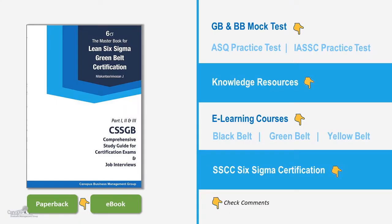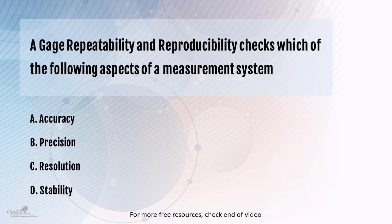Accuracy talks about the deviation from the standard — how good is the reading as against the standard or the norm. Precision talks about the variation in the readings, immaterial of whether it is accurate or not — are we consistently getting those values or not. Resolution talks about the least count, the smallest value that you can measure with the instrument.